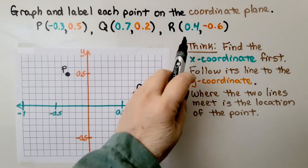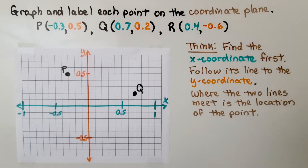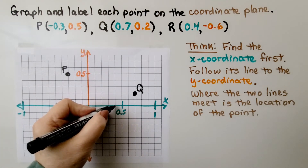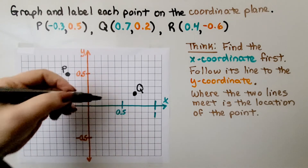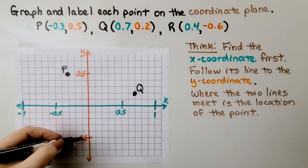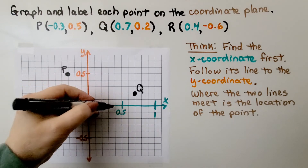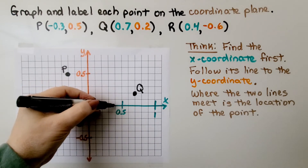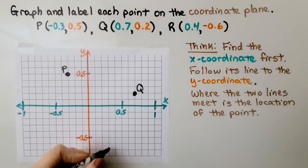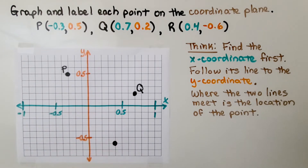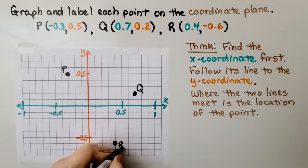For Point R, we're at positive four-tenths on x — that's right here. We need to go to negative six-tenths for y, so we go down. If five-tenths is marked and each unit is one-tenth, we find positive four-tenths on x, then go down to negative six-tenths for y. We label that Point R.